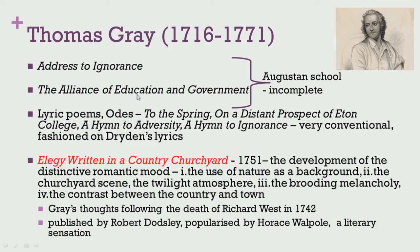These were The Address to Ignorance and The Alliance of Education and Government. However, both of these works remained incomplete and he did not go back to writing these kinds of works in the later stages. In the next phase we find him writing certain odes which are mostly lyrical poems, also along the lines of Pope and Dryden — odes such as Ode to Spring, On a Distant Prospect of Eton College, Ode to Adversity, and Ode to Ignorance. Most of them were very conventional in form and treatment, fashioned on the basis of Dryden's lyrics.